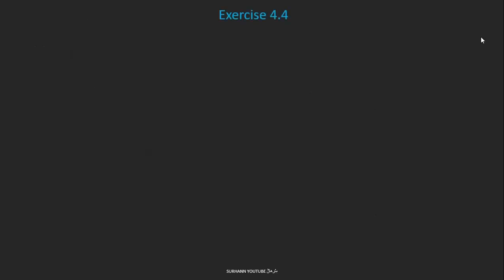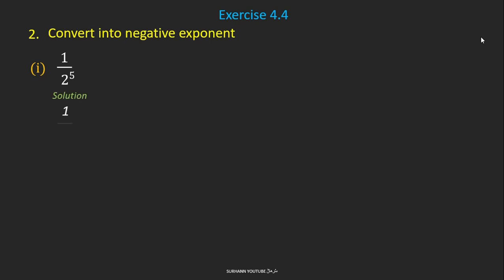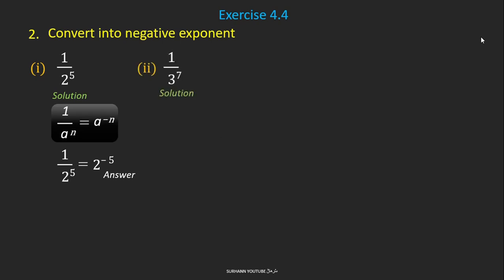In Exercise 4.4, question number 2 says to convert to negative exponents. Problem number 1: 1 upon 2 to the power 5. We already learned this exponent property in this lecture. According to this property, we bring the denominator up and change its sign. Similarly, try to solve all other problems by yourself.